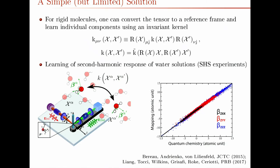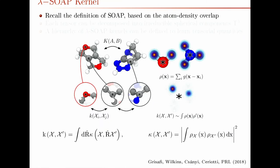But if we wanted to apply this same method to, for example, a concentrated solution of ions, we'd already be stuck. Because it's very difficult — impossible — to define an axis system for each ion. And because we want to split our overall kernel up into a sum of local environment kernels, and some of these local environments are ions, we have to go a little bit beyond this. So what we did was a tensorial generalisation of a SOAP kernel.